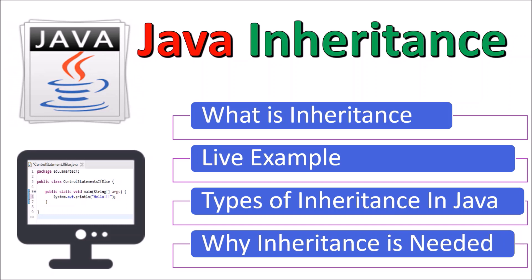Inheritance is a mechanism by which one class is allowed to inherit the fields and methods of another class. It supports the concept of reusability — when we want to create a new class and there is already a class that includes some of the code we want to use, we can inherit from it, reusing its non-private fields and methods.